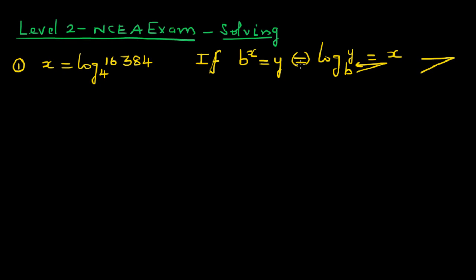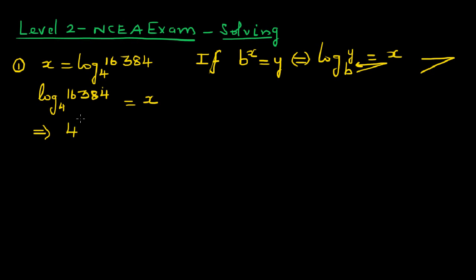So I like to write the same equation in log form. Log base 4 of 16384 is equal to X. Writing this in the exponent form, this implies 4 to the power X is equal to 16384. So there is some value of X which you raise 4 by to get 16384.